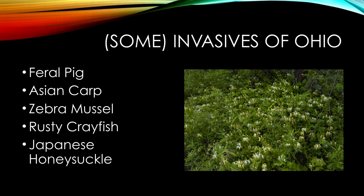So what invasive species might you find in Ohio? There are more than 700 invasive plant species alone in this state. This does not include invasive wildlife, aquatic life, or insects. Some of the most notable species include the feral pig, the Asian carp species, the zebra mussel, the rusty crayfish, and the Japanese honeysuckle, which is pictured here overgrowing many native species.